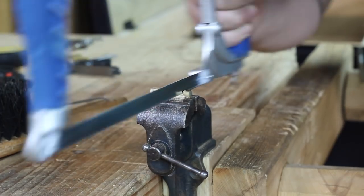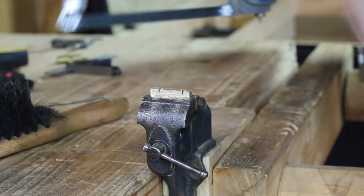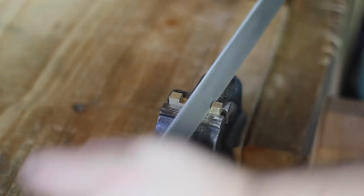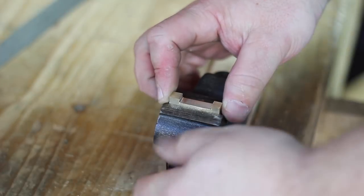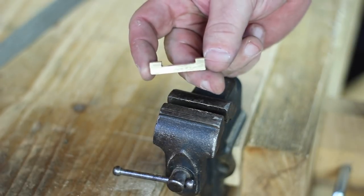While the epoxy was curing, I made the brass foot. This was nothing more than a bit of hacksaw and file work to create a small u-shaped piece of brass to fit the mortise in the fence.